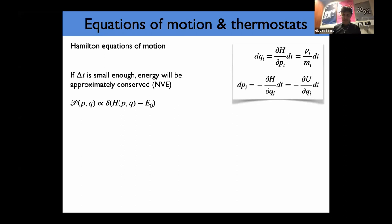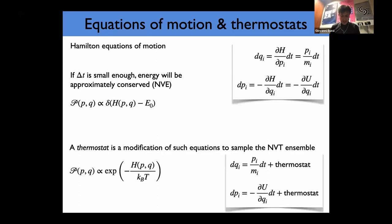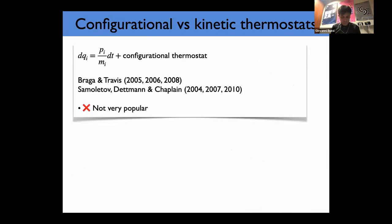When you simulate an isolated system, you typically solve the Hamilton equations using integrators like leapfrog or velocity Verlet. If the integration time step is chosen small enough, you will sample exactly from the NVE or microcanonical ensemble, which has this expression for the probability to extract a given set of configurations and velocities. A thermostat is basically a modification of these equations of motion — you don't solve the Hamilton equations anymore, but add something to the evolution of positions and/or velocities in order to sample from the canonical ensemble instead, where the probability is proportional to exp(-E/k_B T).